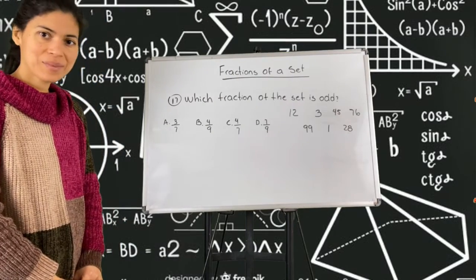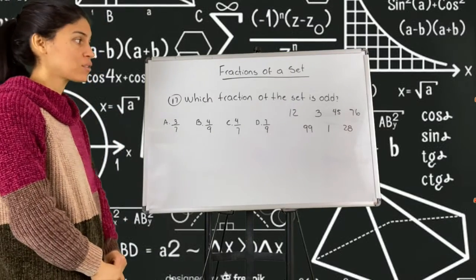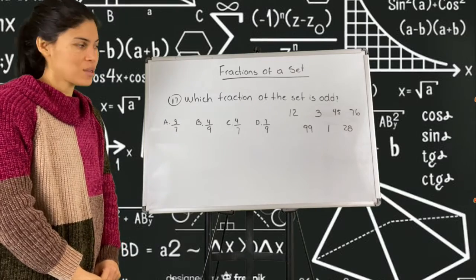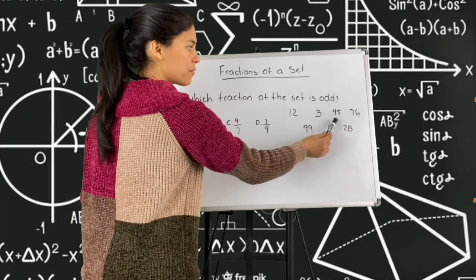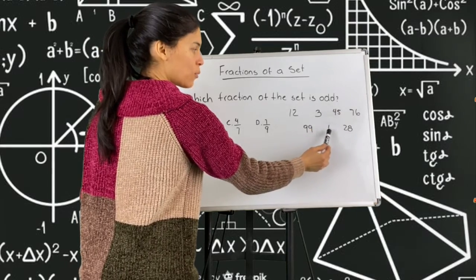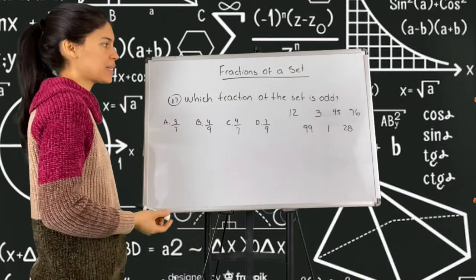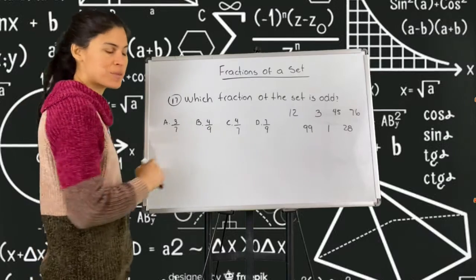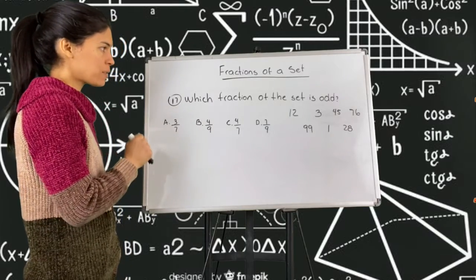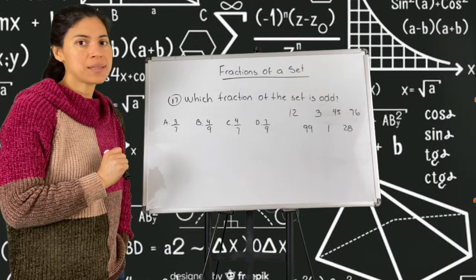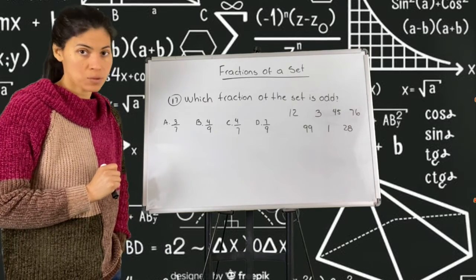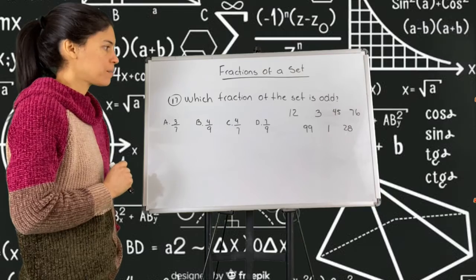For problem number 17, the question is which fraction of the set is odd? The set is right here: the numbers 12, 3, 45, 76, 99, 1, and 28. And we have the options here. So which fraction of the set is odd? Remember that odd means that it's not even, it cannot be divisible by two.